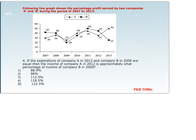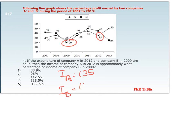Coming to the next question: if the expenditure of company A in 2012 and company B in 2009 are equal, then the income of company A in 2012 is approximately what percentage of income of company B in 2009? We take expenditure of each company as 100. For company A in 2012, the profit is 35%, so income = 135. For company B in 2009, the profit is 20%, so income = 120. We calculate 135 ÷ 120 × 100.